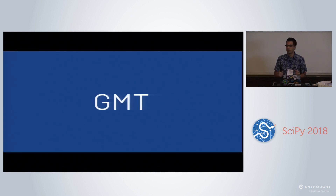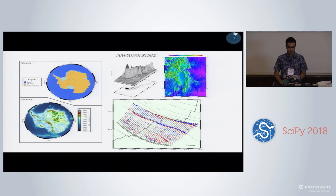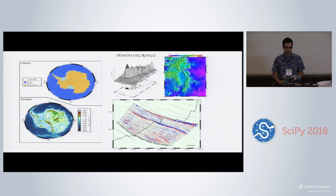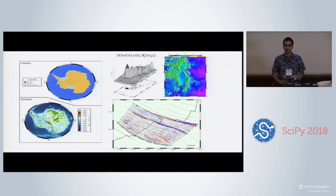I'd like to give a brief overview of what the Generic Mapping Tools, or GMT, is all about, just in case you're not familiar with it. GMT has been around for almost 30 years now, and it's heavily used in the geosciences for making maps, plotting data, and also processing data like bathymetry, gravity, and magnetics, but also in meteorology and oceanography. It makes very nice figures and has a lot of work put into it to be very performant and detail-oriented in the quality of the figures.